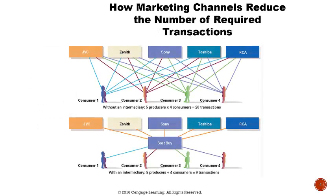Intermediaries minimize transactions by negotiating with one another, and they facilitate the change of ownership between buyers and sellers. They also physically move products from the manufacturer to the final consumer. This slide demonstrates a computer purchase and shows that with the use of intermediaries, you reduce the number of transactions from 20 to 9.